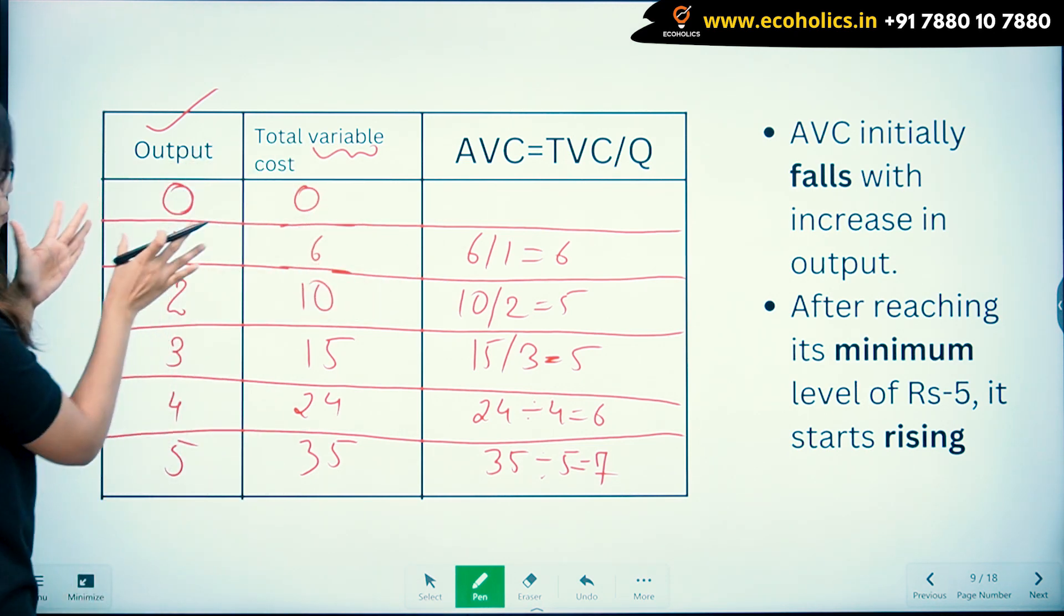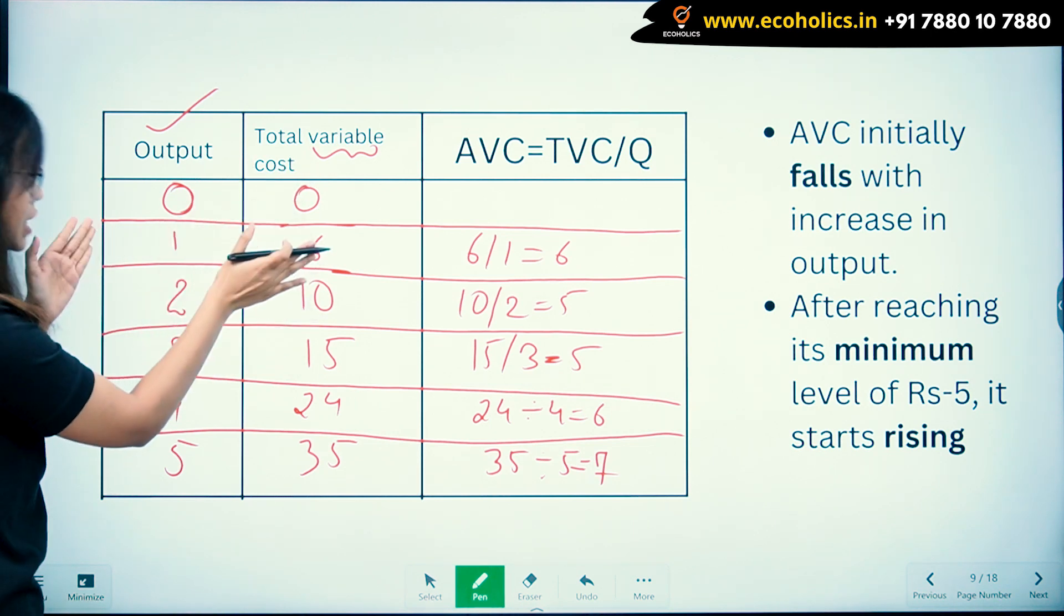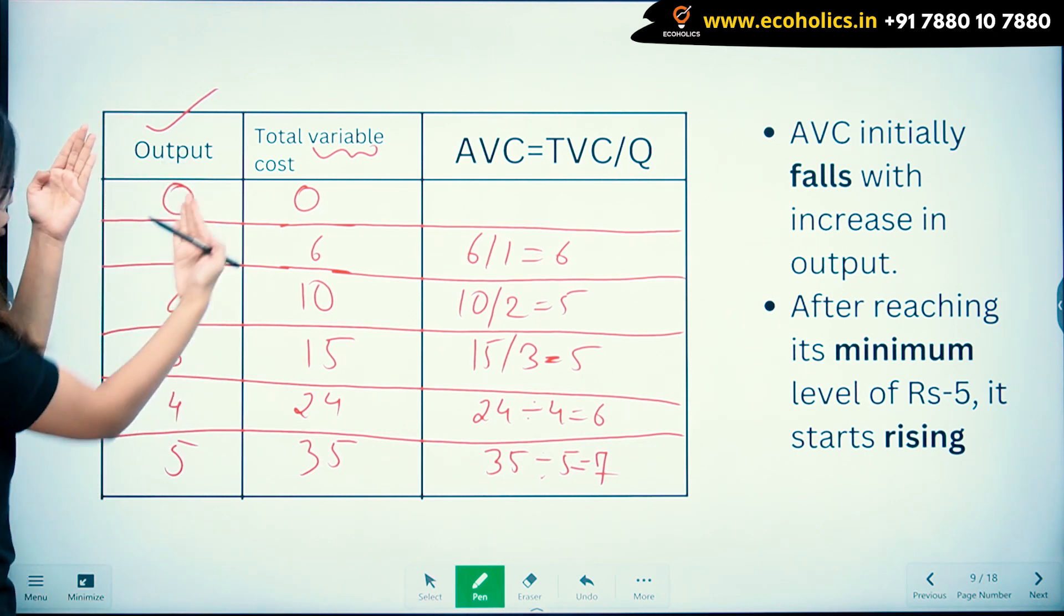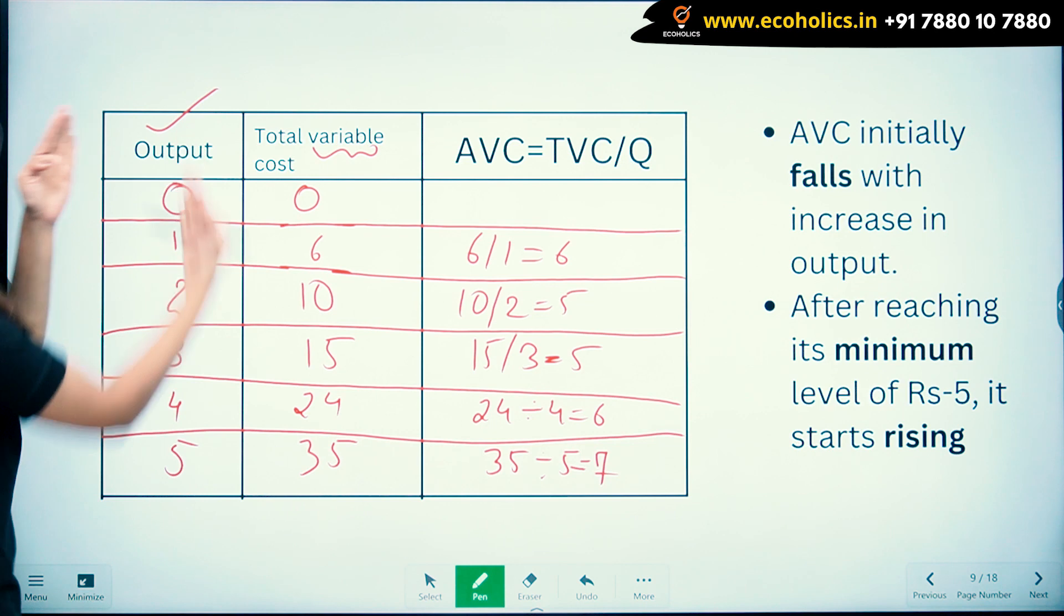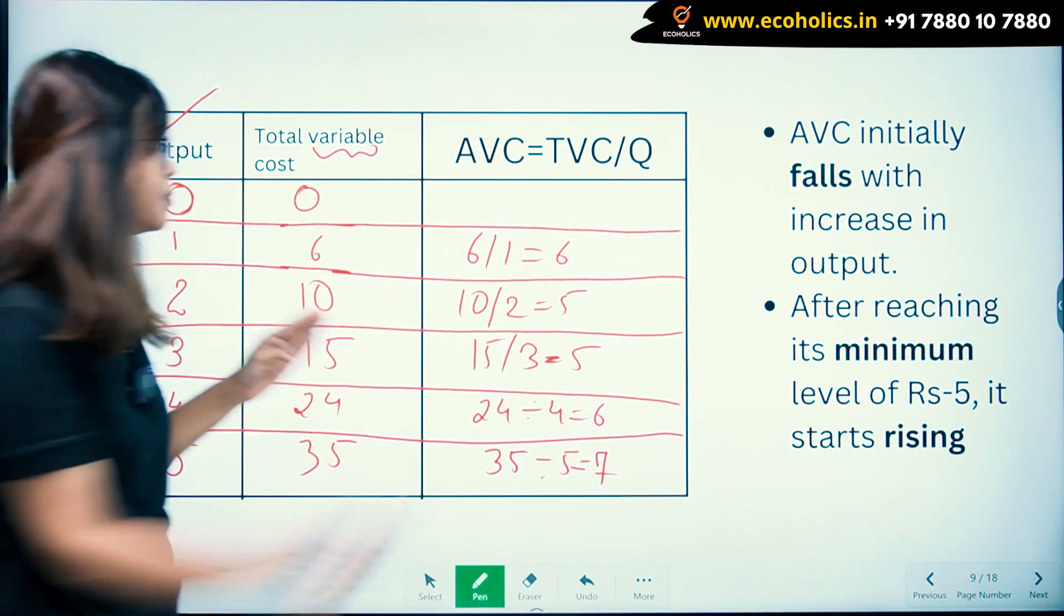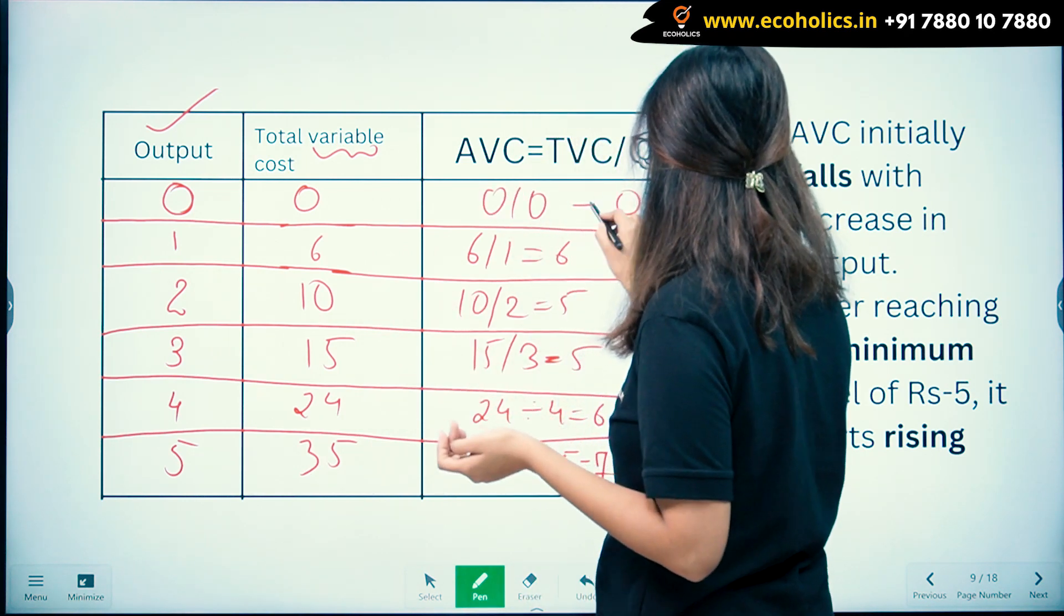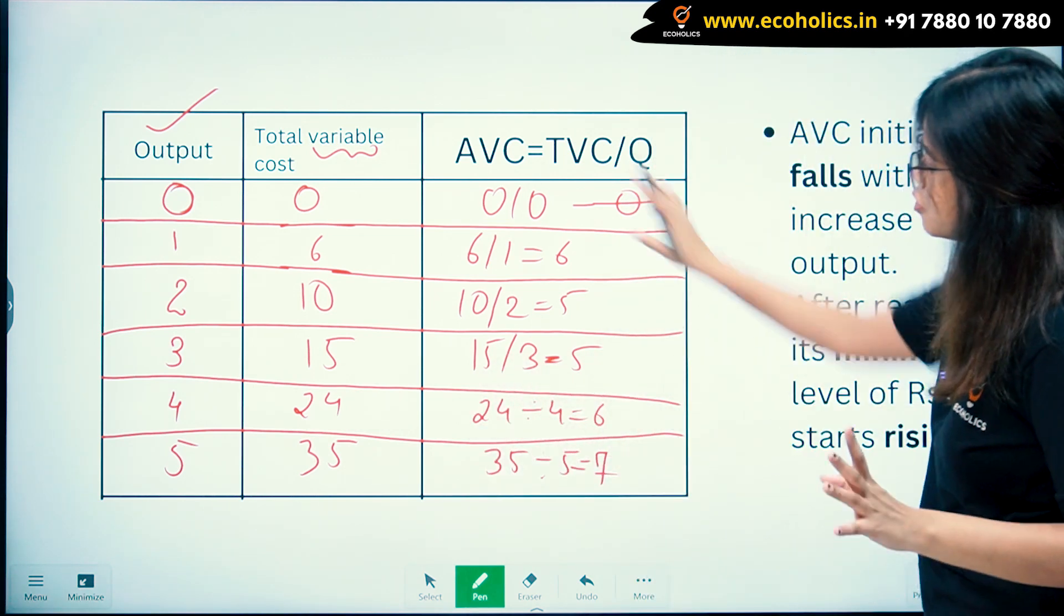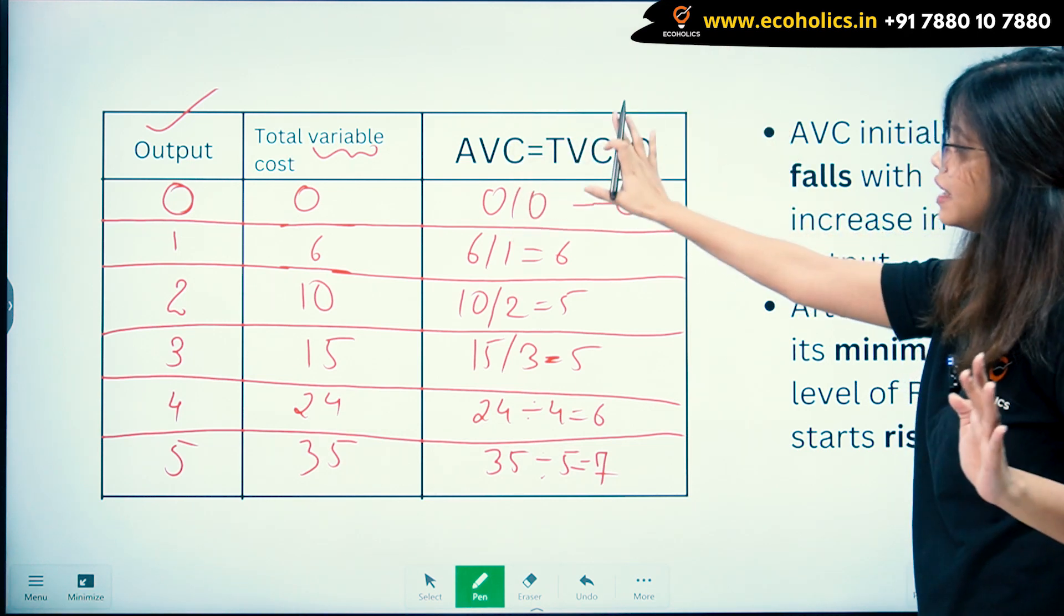When you move further, your output is increasing, and your variable cost goes on increasing from 6 to 10 to 15 to 24 to 35. Your output is increasing from 1, 2, 3, 4, and 5. Now what is your AVC? 0 divided by 0—will you get anything? Nothing. So output is 0, total variable cost is 0. What is your AVC? 0.